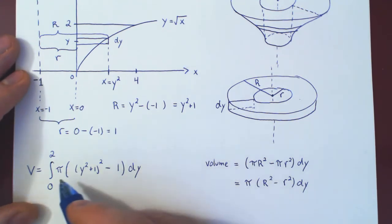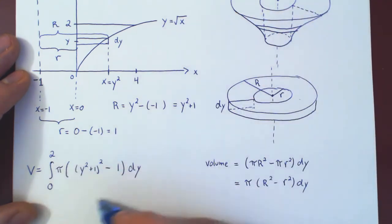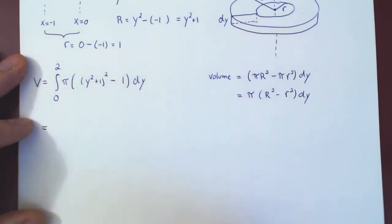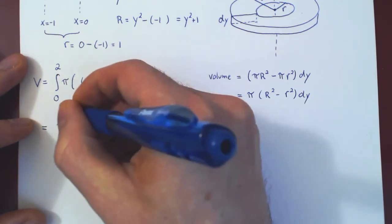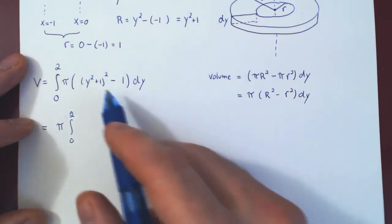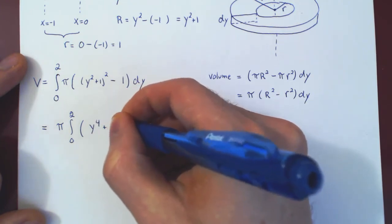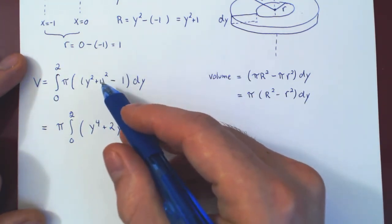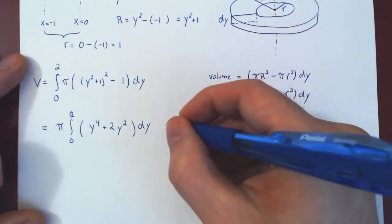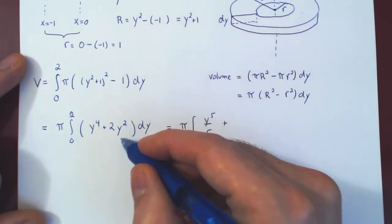Now we apply the fundamental theorem of calculus. We factor pi outside as a constant. We can't integrate the square as is, so we expand: (y squared plus 1) squared gives y to the 4th plus 2y squared plus 1, and subtracting 1 cancels those terms, leaving y to the 4th plus 2y squared. Applying the power rule gives the antiderivative y to the 5th over 5 plus two-thirds y cubed.